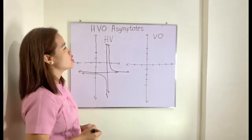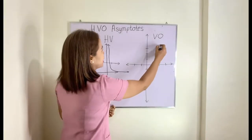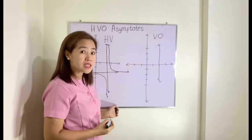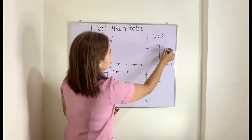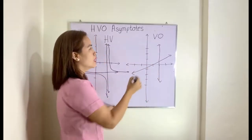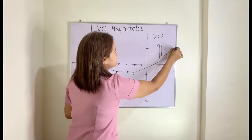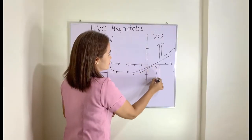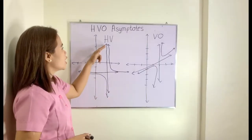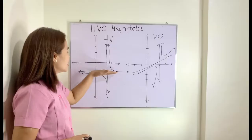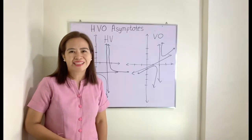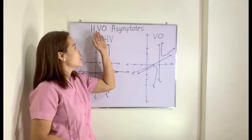Another combination is a vertical line paired with an oblique asymptote. Oblique means diagonal or slant — like this diagonal line here. The graph can move closer to both the vertical and the oblique lines without ever touching them. That is the HVO asymptotes concept.